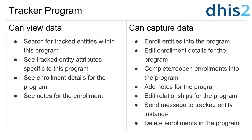We can first review the CanView data sharing setting for tracker programs. By sharing a tracker program with a user or user group with the CanView data setting, this will allow them to search for tracked entities within a program, see tracked entity attributes specific to a program, see enrollment details for the program, and see the enrollment notes.